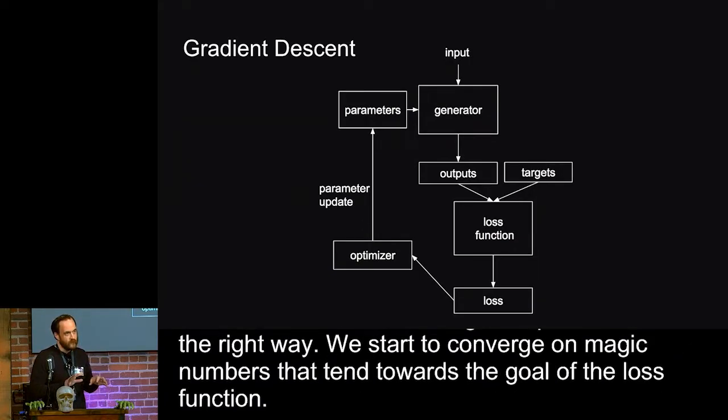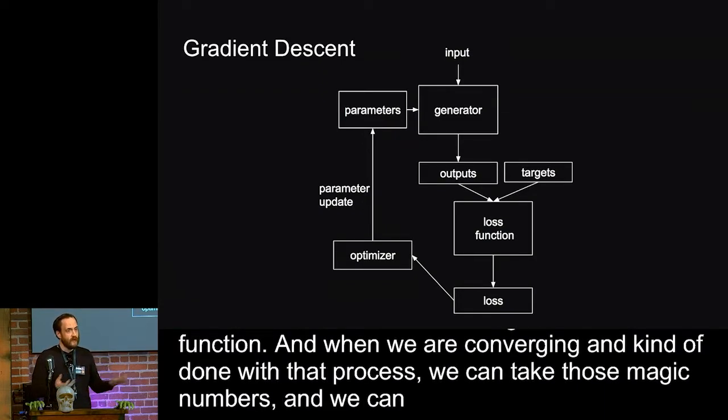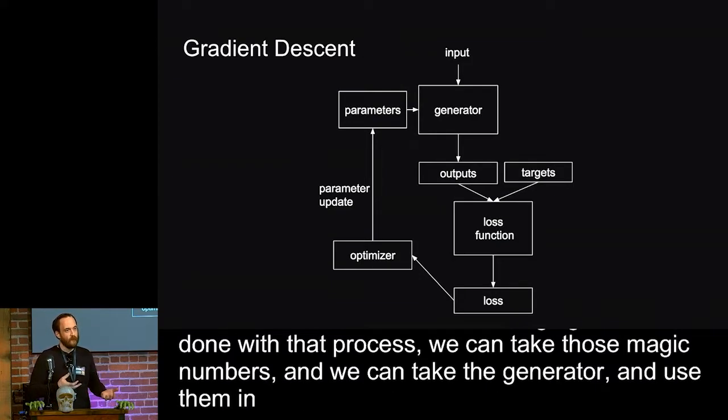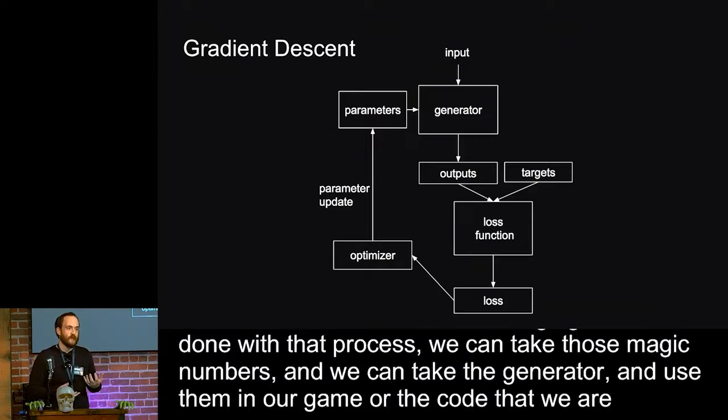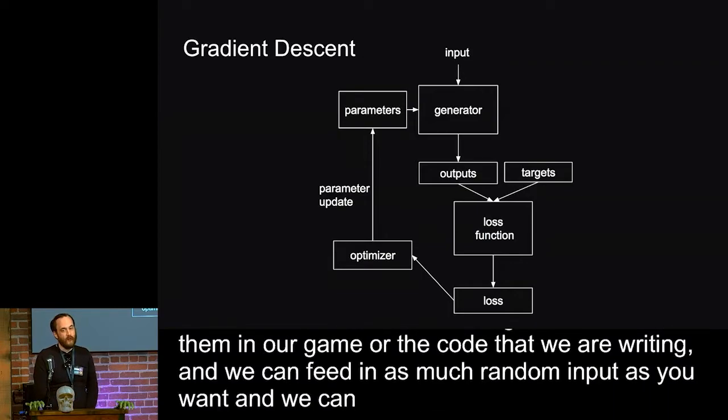And when we're converged, when we're done with that process, we can take those magic numbers and we can take the generator and use them in our game or the code that we're writing. And we can feed in as much random input as we want. And we can get these artifacts back that satisfy those properties of the loss function.